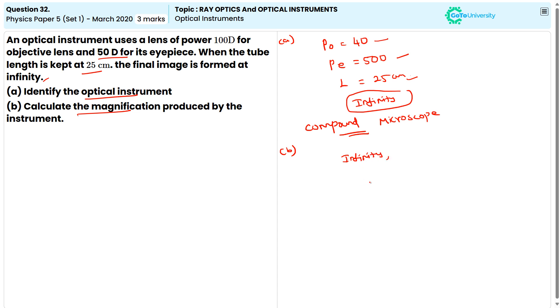The magnification of a compound microscope equal to M equal to L by F0 into D by FE. So, here L is equal to 25cm, so D also 25cm, and F0 equal to 1cm, and FE equal to 2cm.